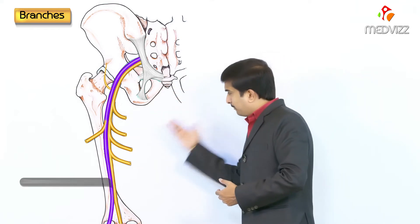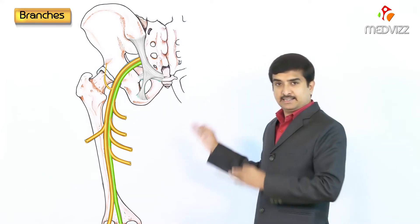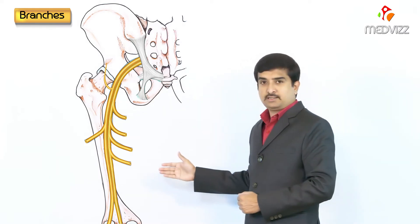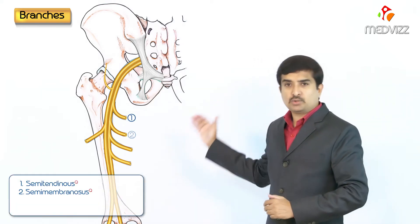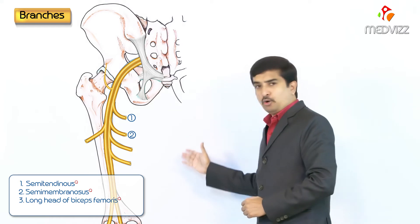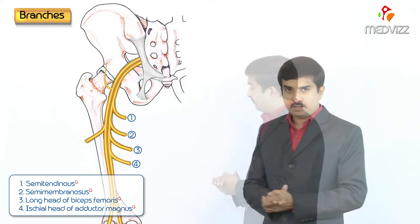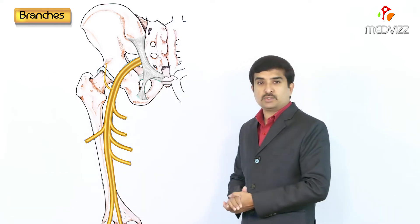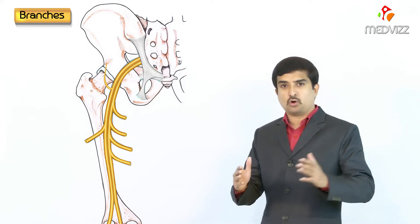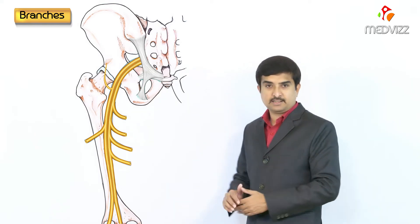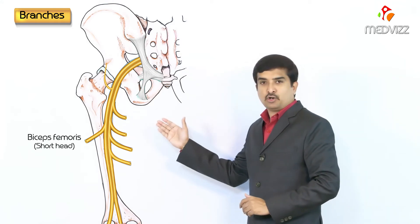The tibial component of the sciatic nerve, which is the medial component, supplies the semitendinosus, semimembranosus, long head of the biceps femoris, and the ischial head of the adductor magnus. The common peroneal part, which is the lateral component of the sciatic nerve, supplies only the short head of the biceps femoris.